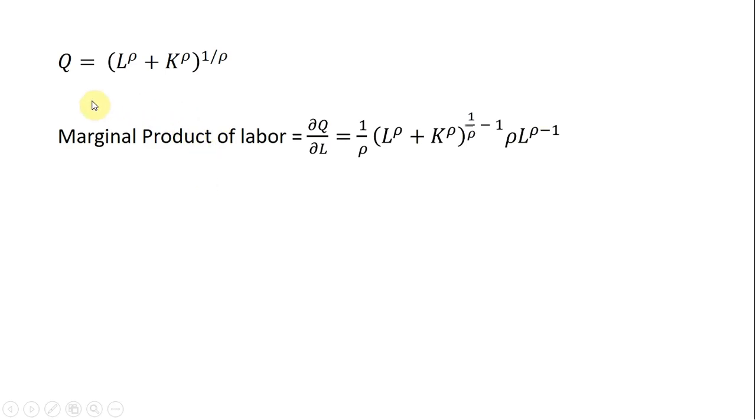The next step, taking this production function, we want to get marginal product of labor. So we're going to take the partial derivative of this production function with respect to L units of labor. So doing that, I show the derivative right here.